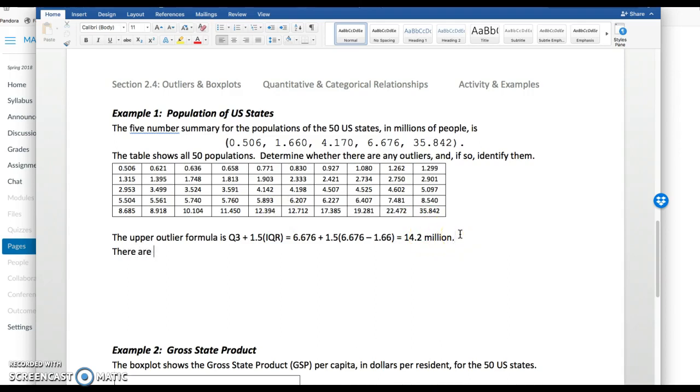This is the upper cutoff. So then we just have to look at the list and see which of these data points have more than 14 million. There's 12 million right here, and then jumping up to 17 million. There are four upper outliers.